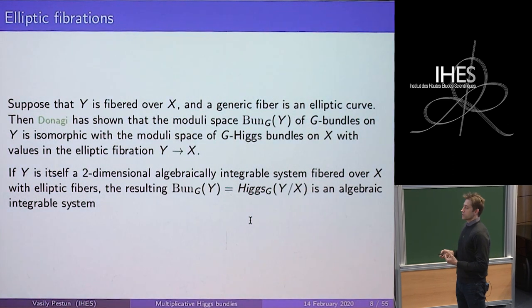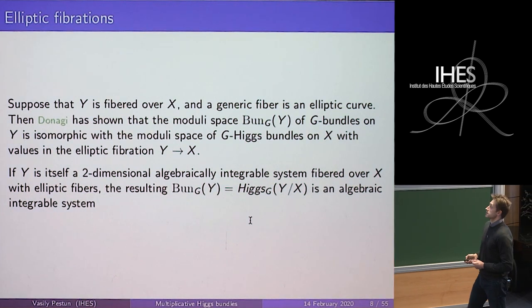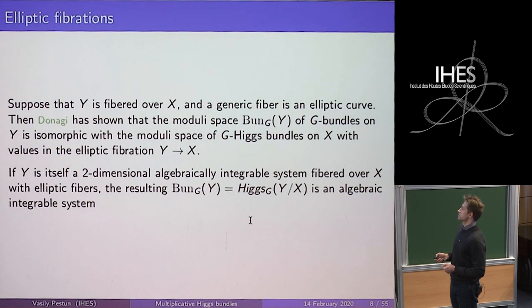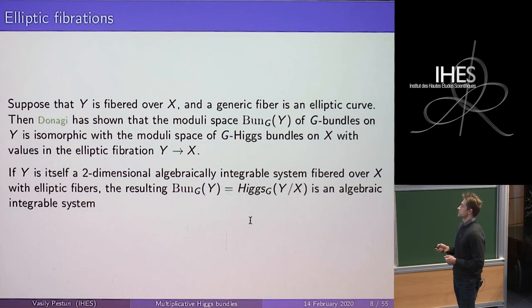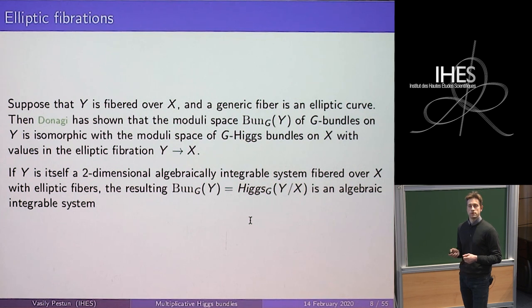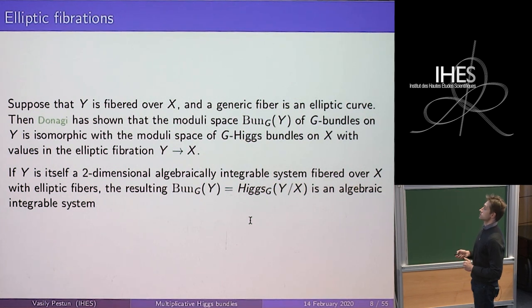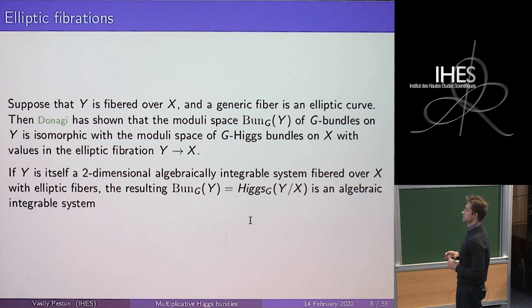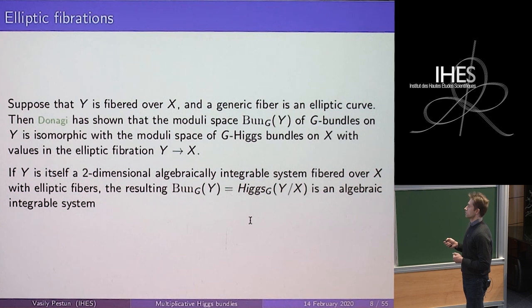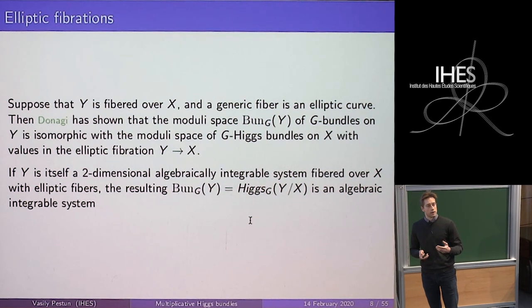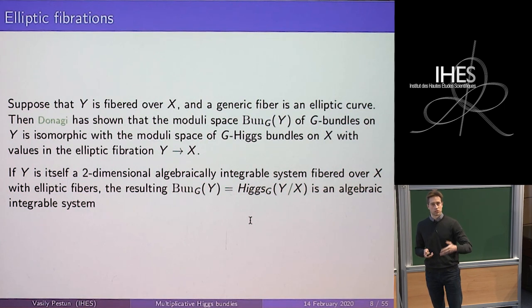This Donagi-Gaitsgory construction can be specialized to Higgs bundles valued not in the canonical line bundle but in something else. Concretely, we can replace the canonical line bundle K_X by a family Y of groups fibered over X. A canonical example studied mostly by Donagi is when Y is an algebraic variety fibered over X with generic fiber an elliptic curve. Then the moduli space of G-bundles on Y is isomorphic to the moduli space of G-Higgs bundles on X with values in the elliptic fibration Y over X. If Y itself is a two-dimensional algebraic integrable system fibered over X with elliptic fibers, the resulting space is an algebraic integrable system — elliptic in the momentum direction.